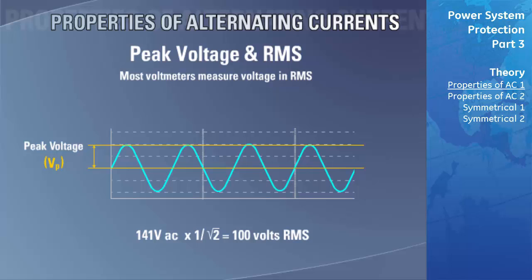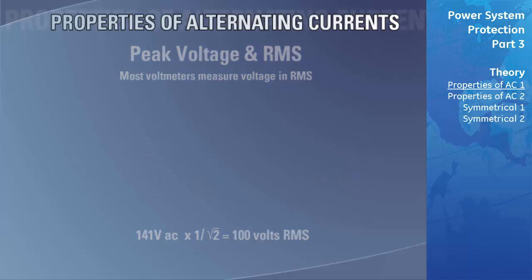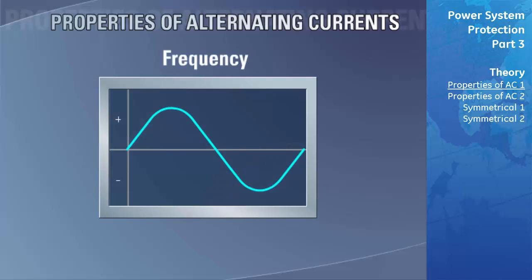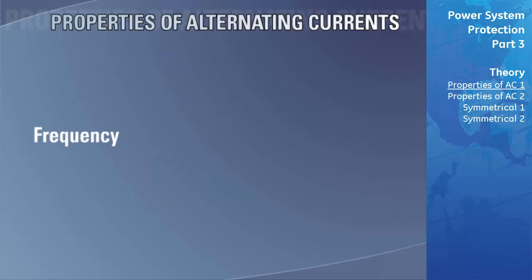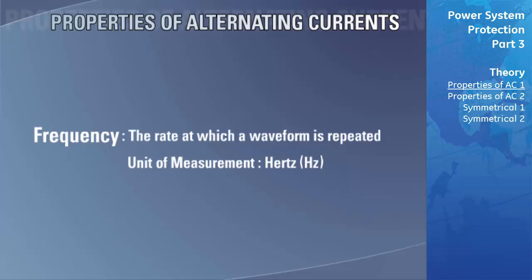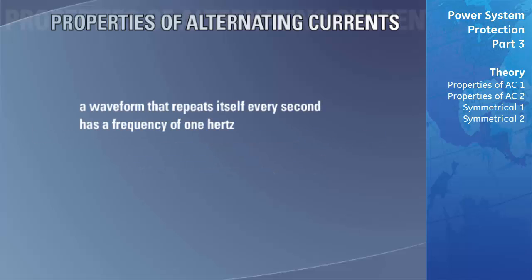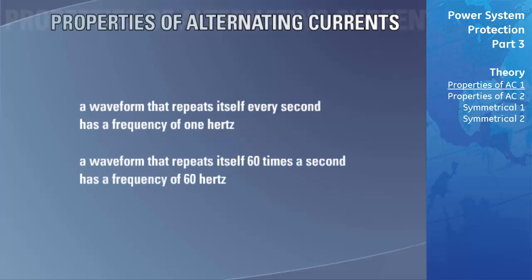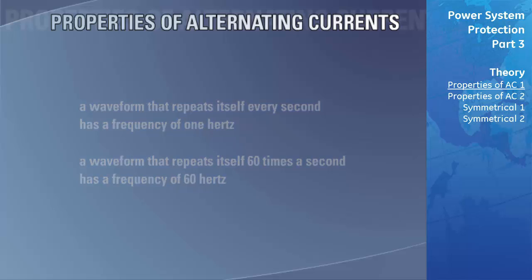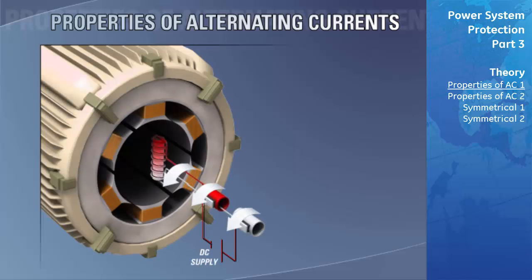Frequency is the rate at which the waveform is repeated. Hertz is the engineering unit that quantifies frequency and equals the number of times a waveform repeats itself per second. A waveform that repeats itself 60 times a second has a frequency of 60 hertz. For our generators to produce one cycle of AC, the exciter must complete one revolution, meaning the exciter must complete 60 revolutions per second to produce power at 60 hertz — a common speed for large utility-class steam turbine-driven generators.